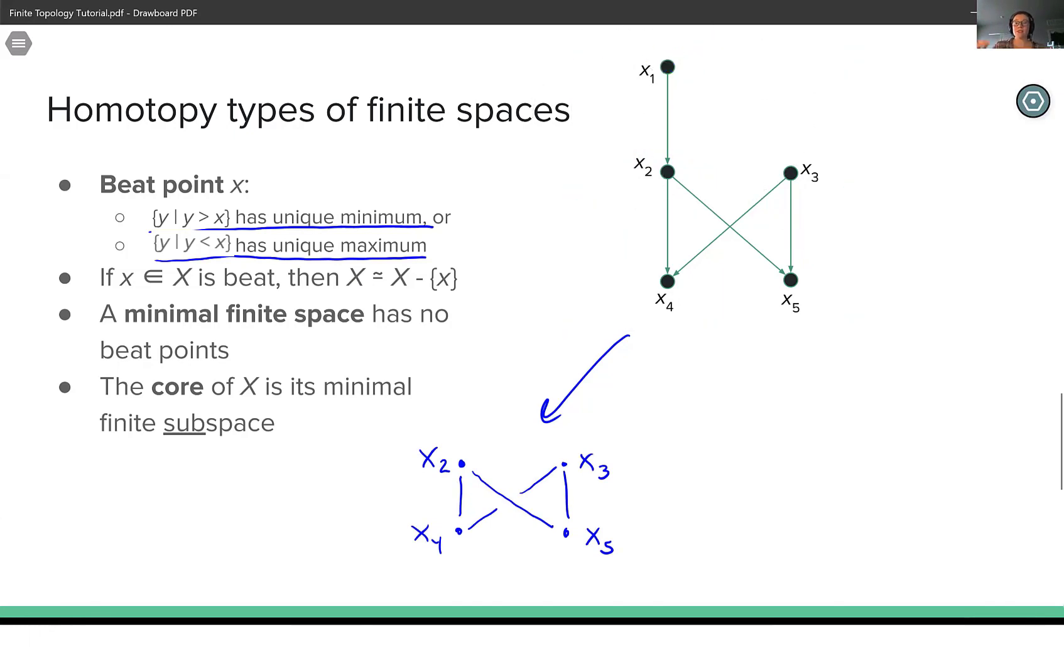However, this process of removing beat points isn't unique. So notice that the point x2 is also beat. If we look at its punctured upset, its punctured upset has a unique minimal element, which is just the one point x1 itself. So we can also get a space by deleting x2. And this leaves us with another Hasse diagram with the points x1, x3, x4, and x5.